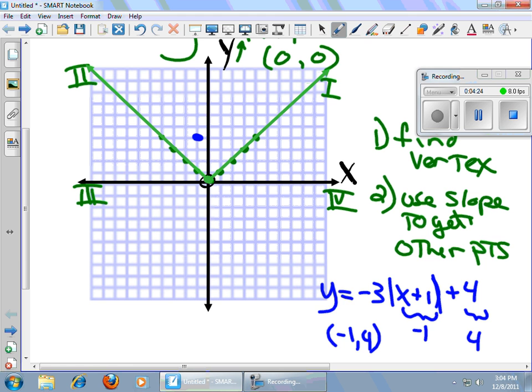Now, my slope looks like it's going to be three over one. Negative three over one. That negative is going to flip the V downward, and so therefore I'm going to go down 1, 2, 3. Over one. Down 1, 2, 3. Over one.